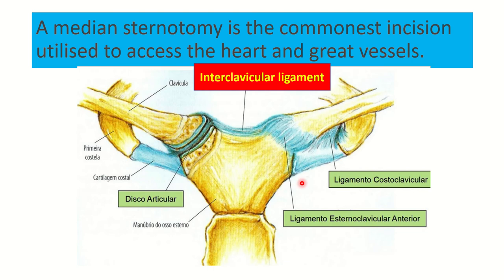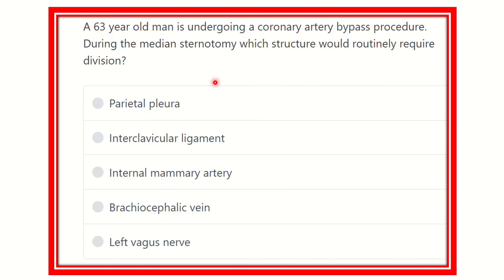At the jugular notch we can see a ligament — the interclavicular ligament — because this ligament connects the right and left clavicle through the jugular notch of the sternum. During the median sternotomy, when the incision is given along this line, this ligament must be cut. Median sternotomy is the commonest incision to access the heart and great vessels, and for this procedure the interclavicular ligament is routinely cut.